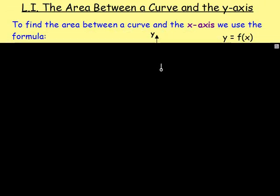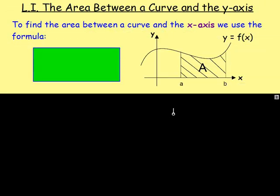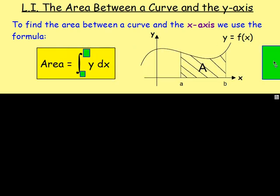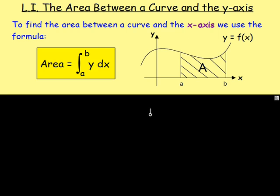We already know how to work out the area between a curve and the x-axis. Say we had to work out area A between x equals a and x equals b, with our curve y equals f of x. We would integrate. The area equals — whatever y is equal to, you integrate that. If we want the area between x equals a and x equals b, those would be your limits: lower one at the bottom, larger one at the top. So we're integrating whatever y is between a and b, with respect to x.